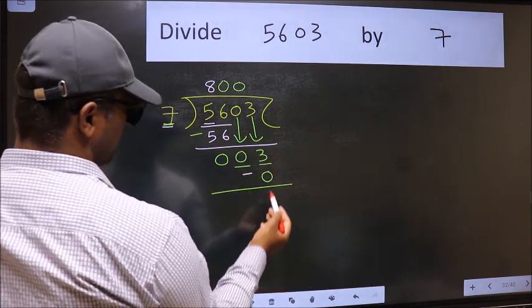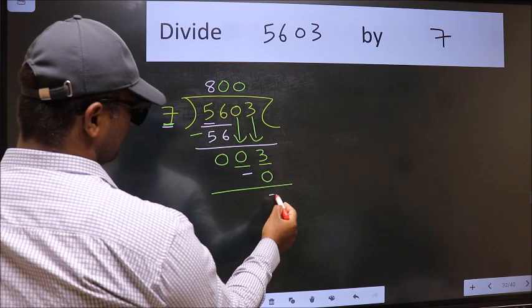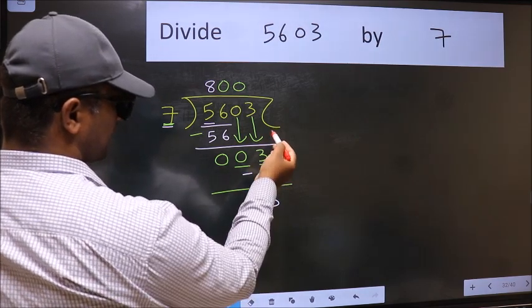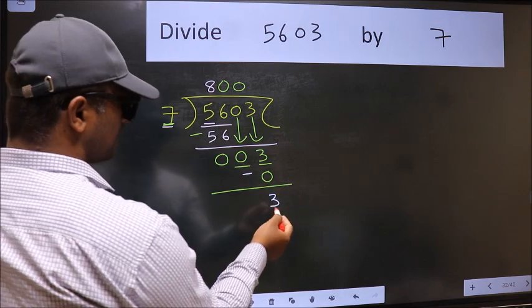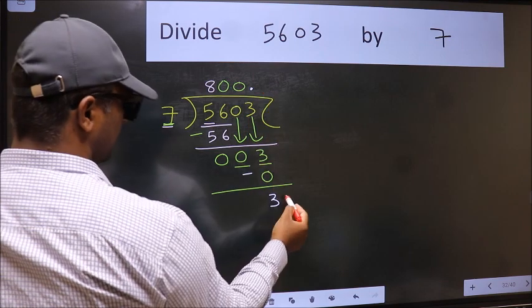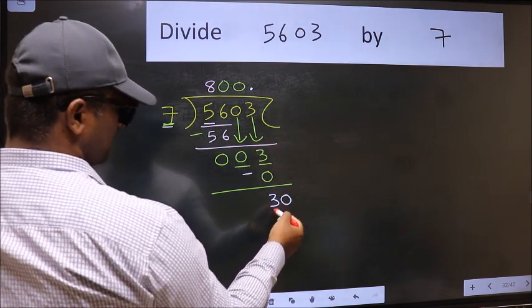Now we should subtract. 3 minus 0, 3. Over here, we did not bring any number down. And 3 is smaller than 7. So now we can put dot and take 0. So, 30.